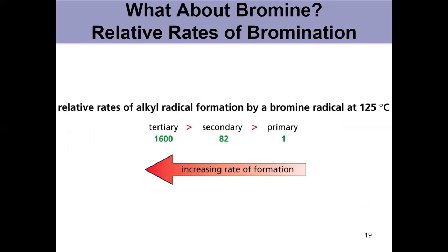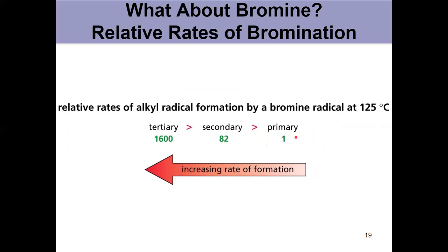Back into chlorination and bromination: if we're adding bromine, look at these relative rates of bromination for tertiary, secondary, and primary. Primary is always going to be set to a relative reactivity of one. For chlorination we had 1 to 3.8 to 5. But look at this: 1 to 82 to 1600 when we're dealing with bromine instead of chlorine, specifically at 125°C. That difference is so significant that the reactivity factor really strongly outweighs the probability factor.